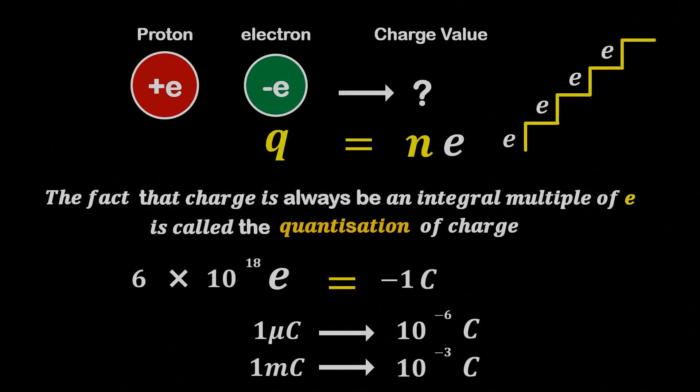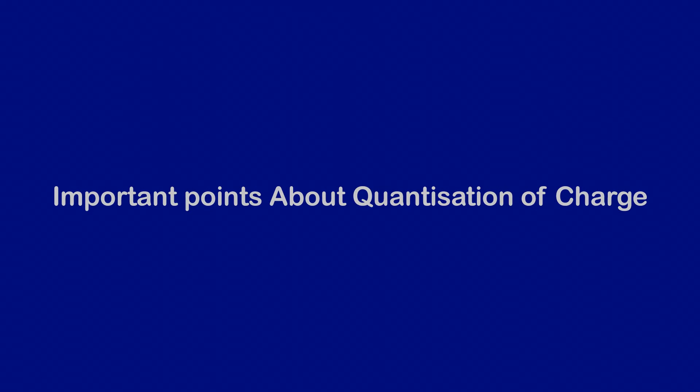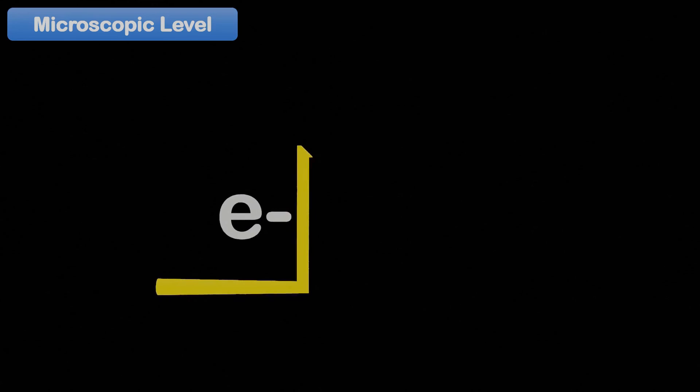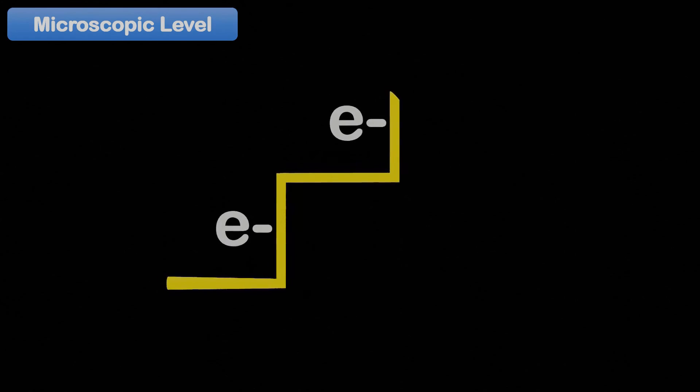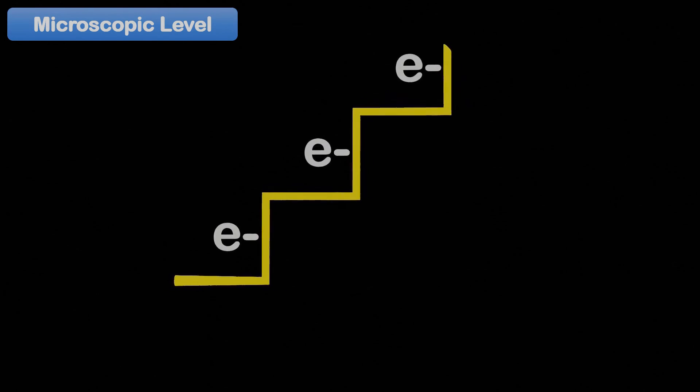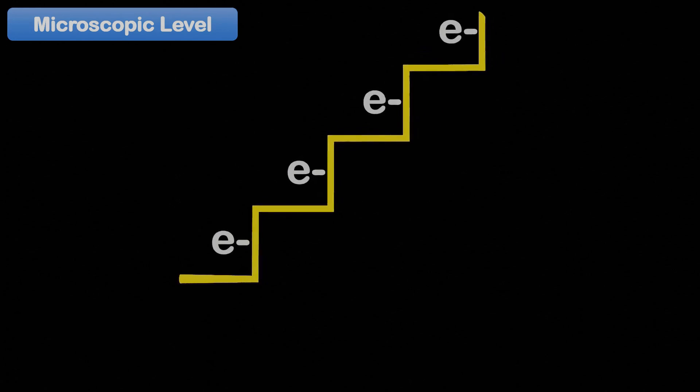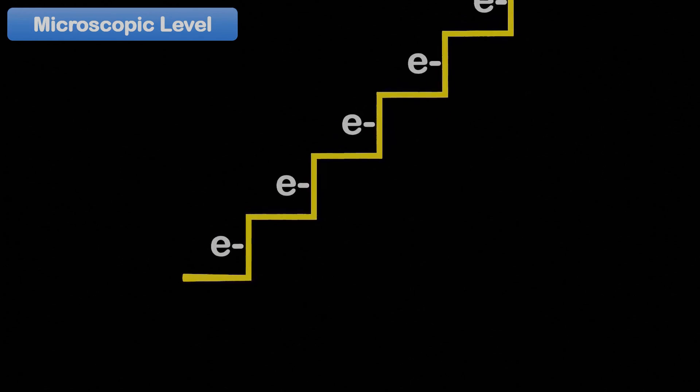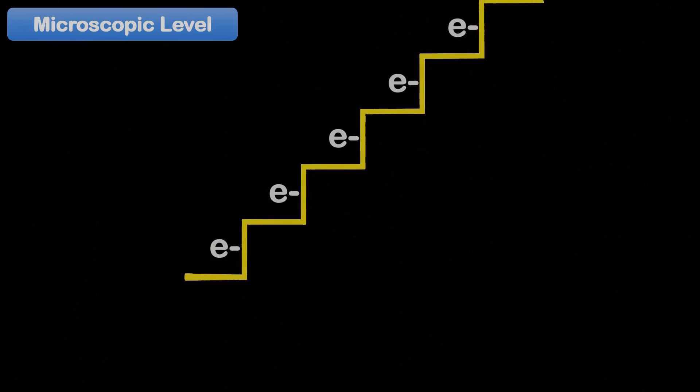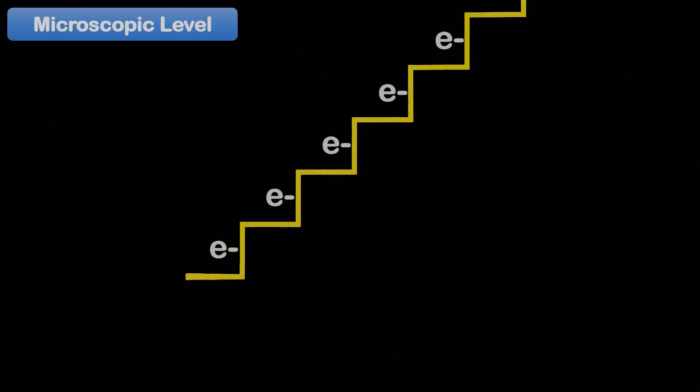At last, let's understand some important points about the quantization of charge. At the microscopic level, the addition or removal of just a few electrons can lead to measurable increase or decrease in overall charge in discrete steps of the elementary charge value e. This phenomenon highlights the importance of considering the quantization of charge at the microscopic level.